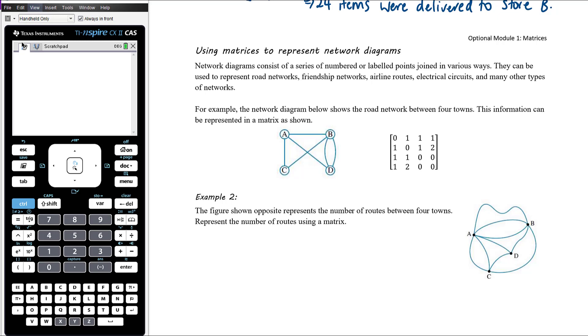So here we have a network diagram that shows the road network between four towns. And this information can be represented in a matrix as shown. Now, it probably should be labelled. And as I said to you, most often in VCE papers and exams, the matrix will have the labels. But we can also interpret what the labels should be based on the numbers here. So we're seeing a number of interesting things. We've got a leading diagonal of zeros in this instance. And that makes perfect sense if we think about it, because what the leading diagonal is representing is the number of roads from town A to town A, or from town B to town B, or from town C to town C, or from town D to town D. And obviously there are no roads that go from A straight to town A. So that makes sense.